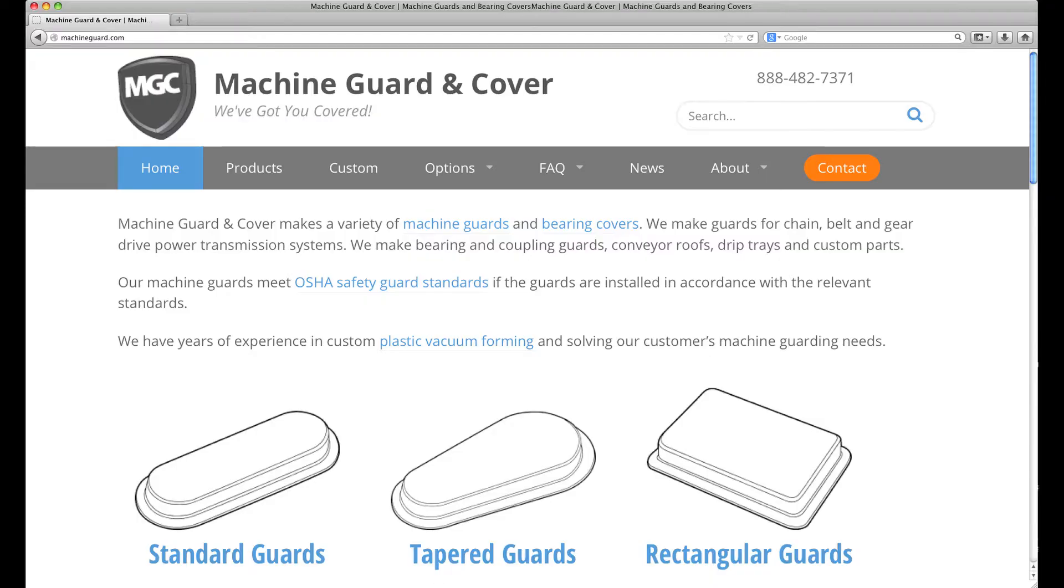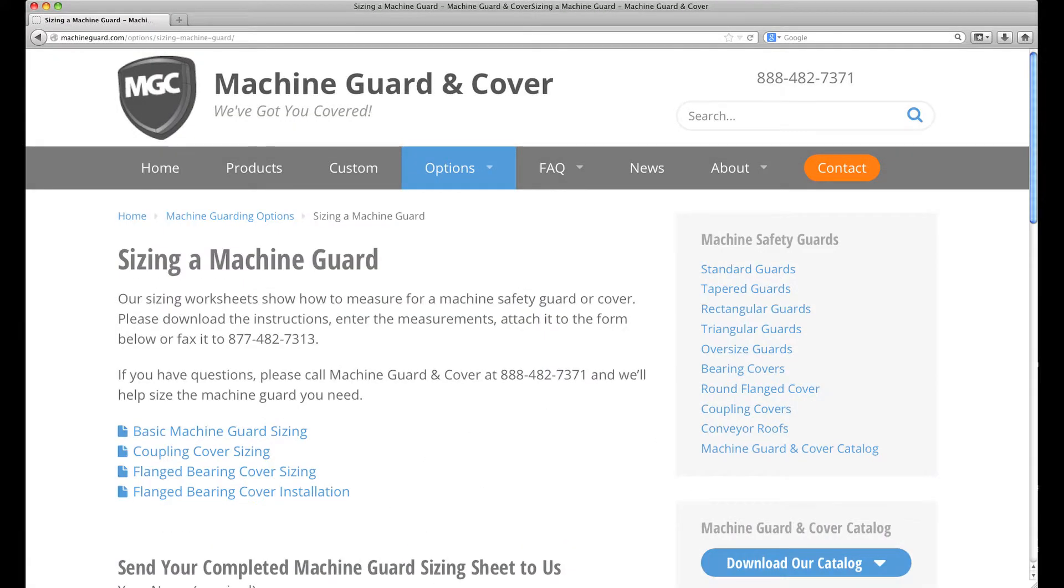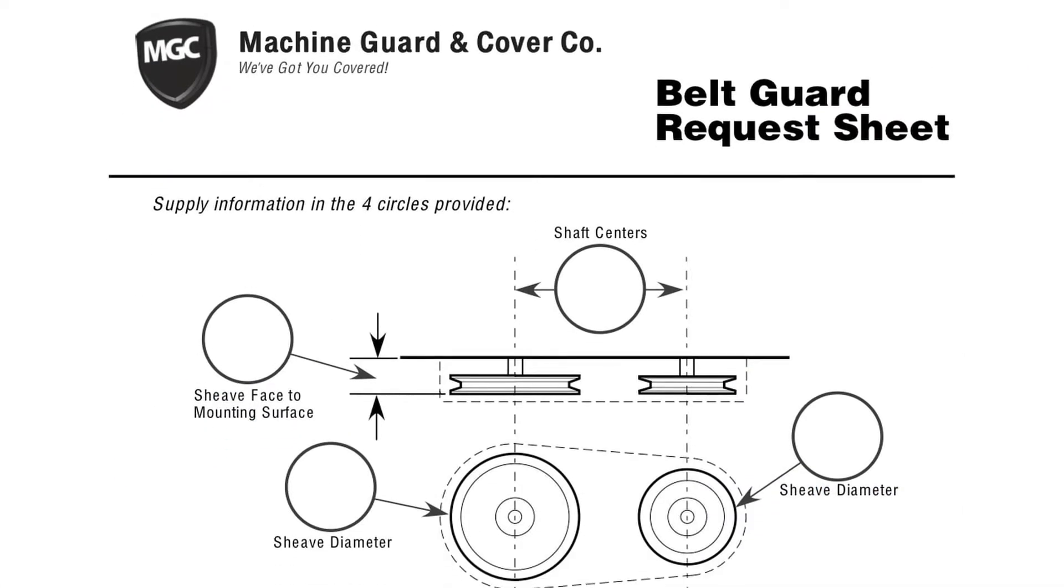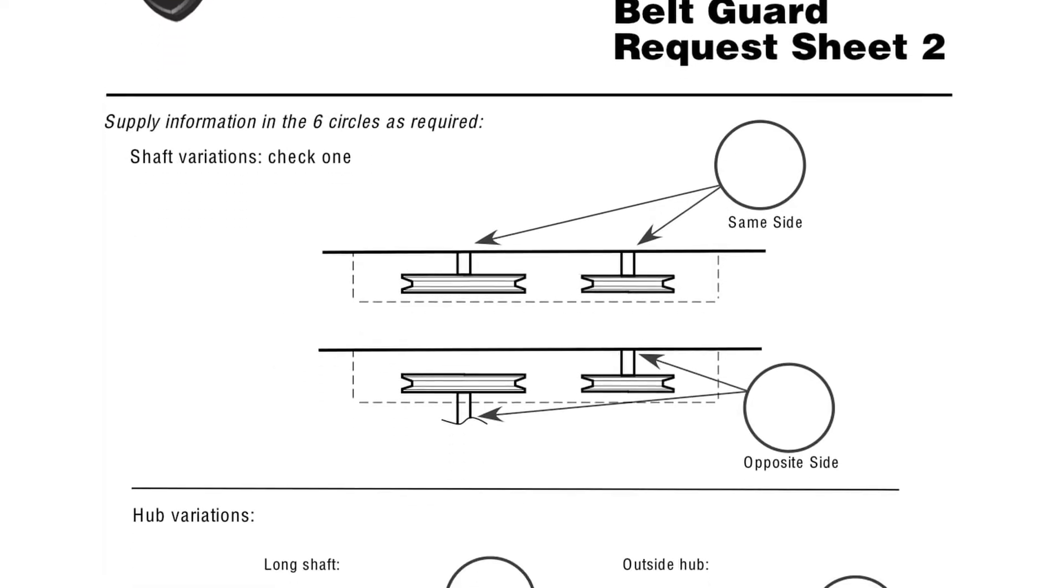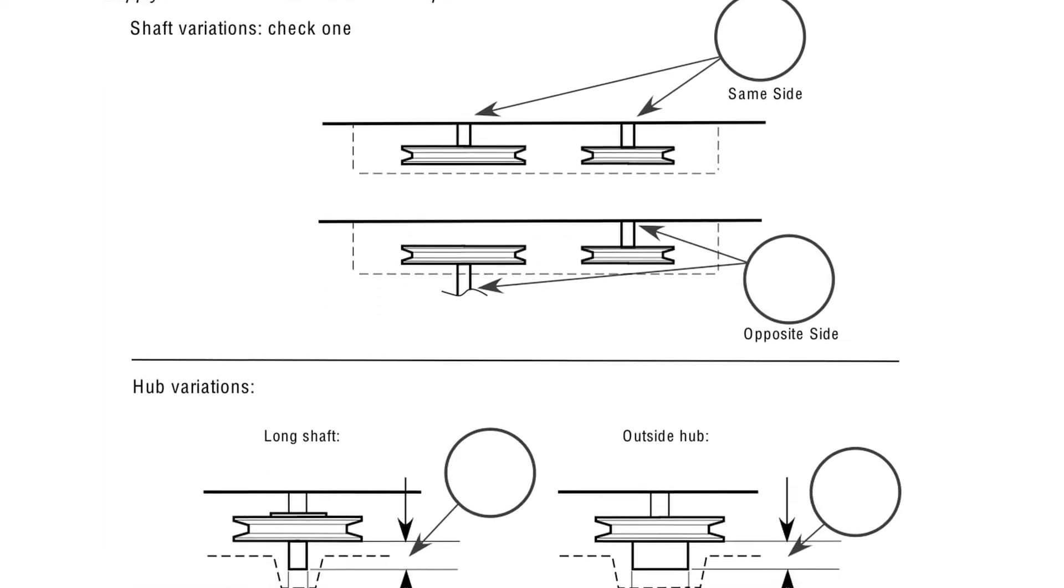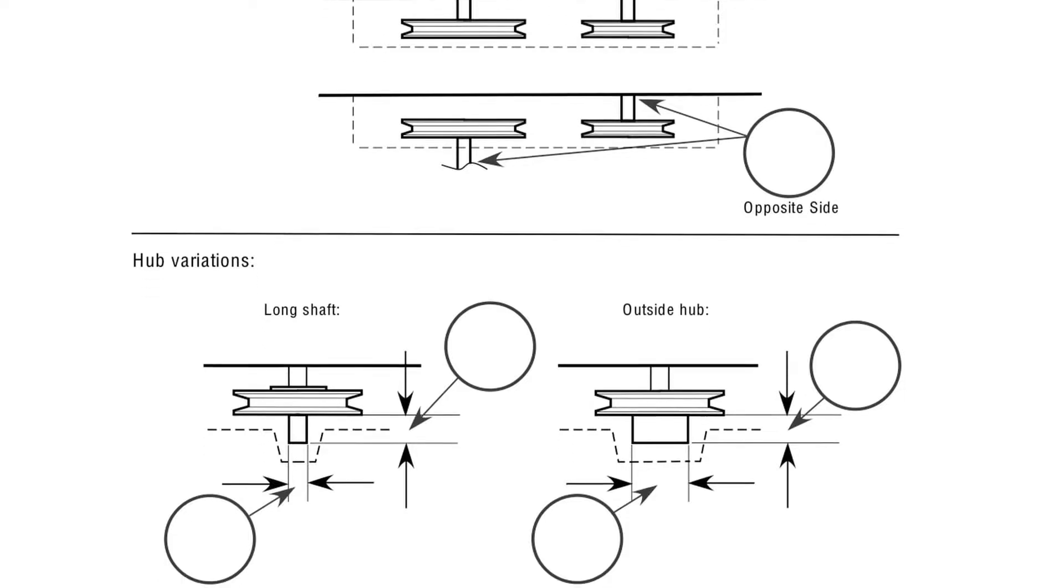In this video we will be entering measurements into data fields of Machine Guard and Cover's standard belt guard request form. The form can be found on Machine Guard's website as well as in the catalog. The measurements taken can be used to match to a standard guard in the catalog or are used for requesting a custom guard if required.